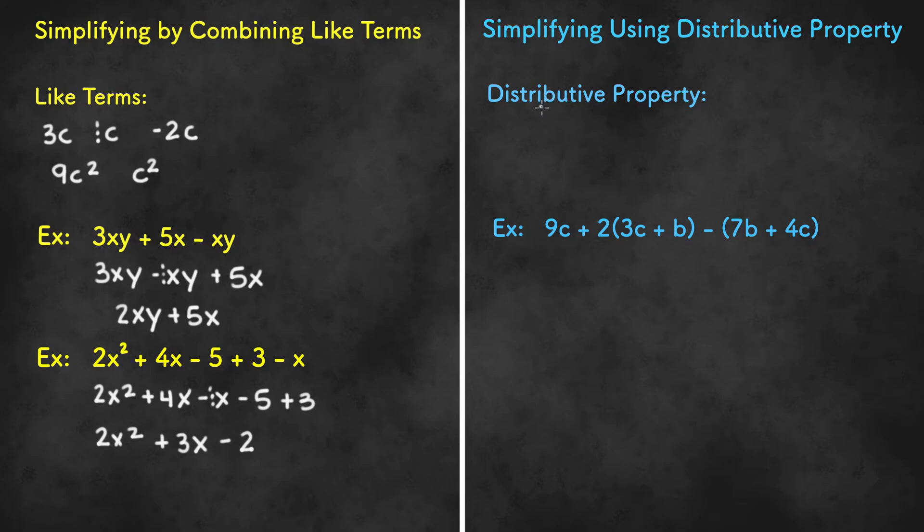Now when we simplify using distributive property you need to first know what distributive property is and what it looks like. An example would be 2a times the sum of 3a plus 5, or it could be something like negative 4z plus 7x.